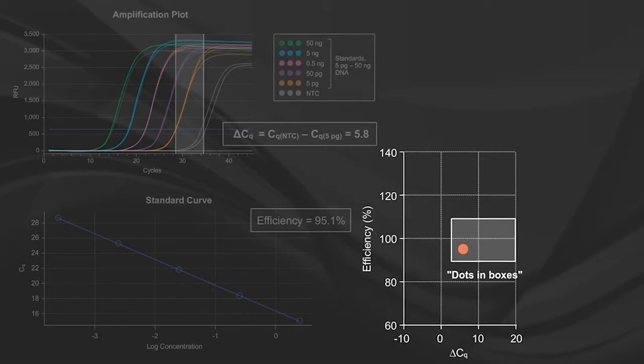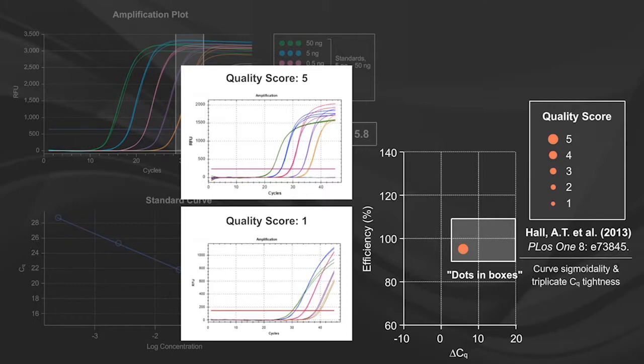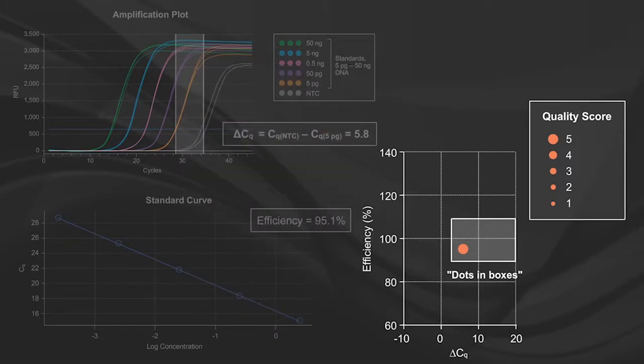In order to represent additional information, the overall quality of the qPCR curves was scored on a scale from 1 to 5. This scoring method was built upon previously published work by Hall et al., which encompassed factors such as curve sigmoidality and triplicate cq tightness. The quality score was then used to define the size of the dot, where the larger dot represented a higher quality score.